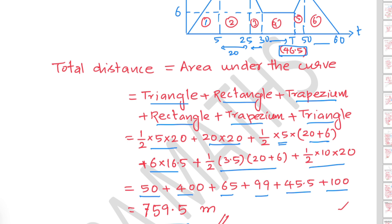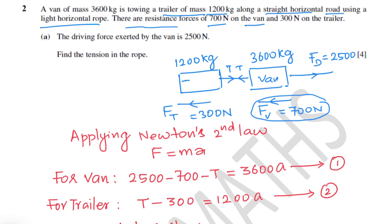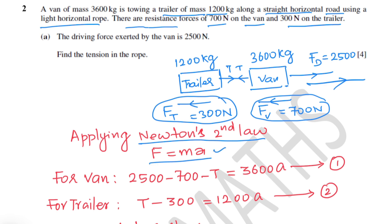Question two. A van of mass 3600 kilograms is towing a trailer of mass 1200 kilograms along a straight horizontal road using a light horizontal rope. There are resistance forces of 700 newtons on the van and 300 newtons on the trailer. The driving force acts forward while the resistance forces act in the opposite direction. Applying Newton's second law, force equals mass times acceleration.